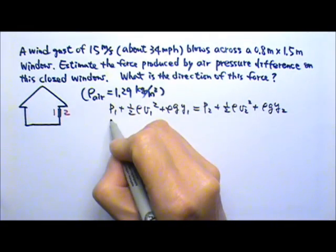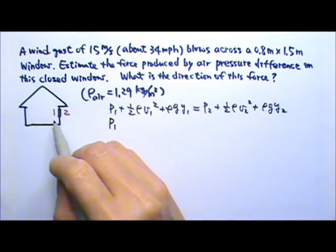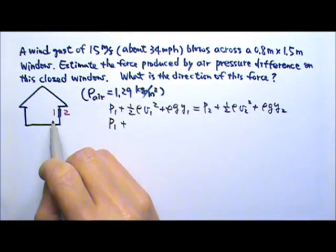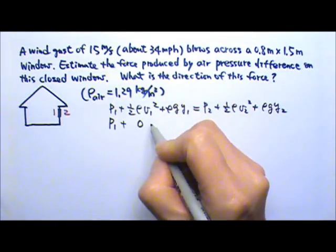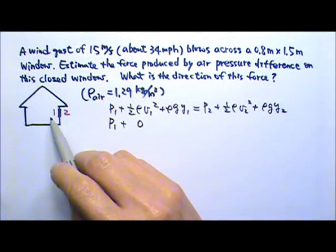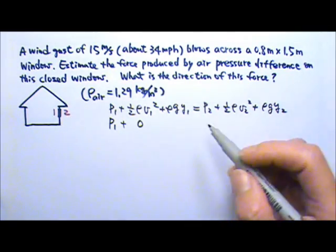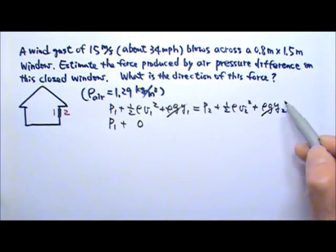Inside the house, the pressure is P1. Inside the house, the air is calm, so the speed of air flow is 0. Because Y1 and Y2 are going to be the same, there's no height difference on the two sides, so we can just cross these two out.